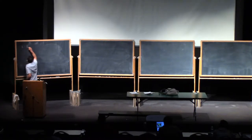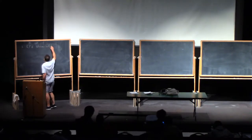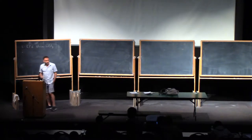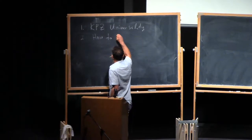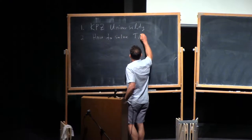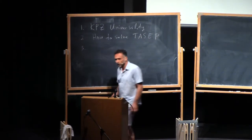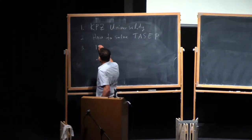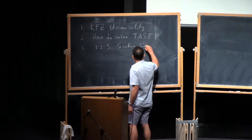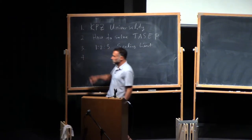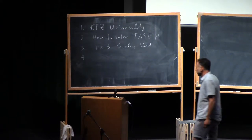Lecture 1 will be a general introduction to KPZ universality. In Lecture 2, I'll solve the model TASEP. In Lecture 3, we'll take the scaling limit — the solution. In Lecture 4, we'll get the KPZ fixed point, and Lecture 4 will be the story about the KPZ fixed point, what it is.